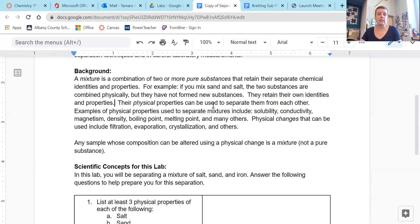Their physical properties can be used to separate them from each other. So whenever we're separating a mixture, we are using physical properties. Examples of physical properties used to separate mixtures include solubility, which is dissolving in water, ability to dissolve in water.